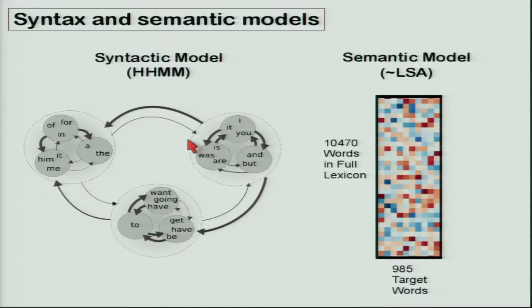We fit a syntactic model — a hierarchical hidden Markov model that recovers individual syntactic states and transition probabilities from text, using a corpus of six to ten billion words. We also extract a latent semantic analysis model, which is essentially a covariance model. We have 985 target words — the most common words in English, excluding function words like 'the' and 'a' — and we look at their covariances in a large corpus, using those covariances as our feature space, defining words in terms of the presence of other words.